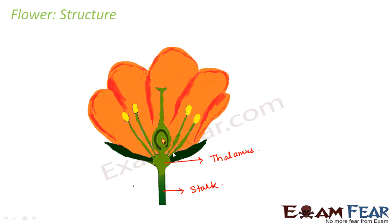Above the thalamus, you have the sepals. You would have seen the green-colored small leaf-like structures which are present on a flower. When you are learning this, take a flower from your garden and try to observe these parts. You will be able to see the stalk, the thalamus, and just above the thalamus you will see some small green-colored leaf-like structures — these are called sepals.